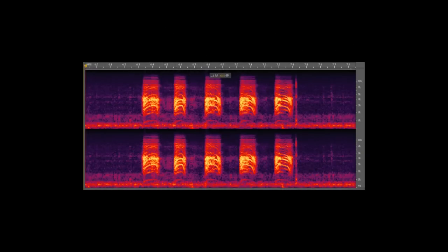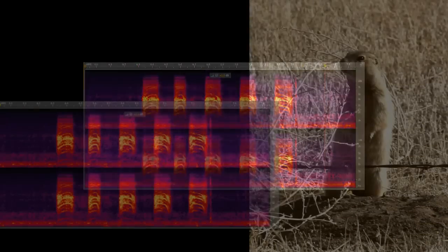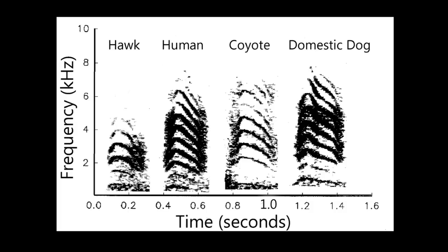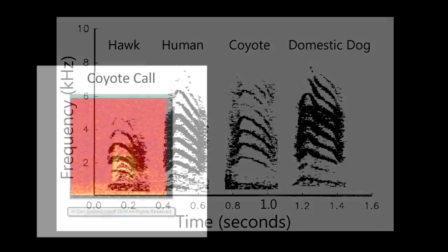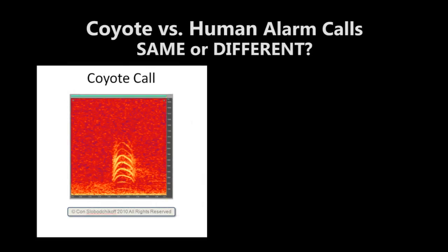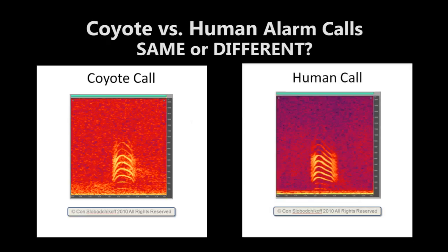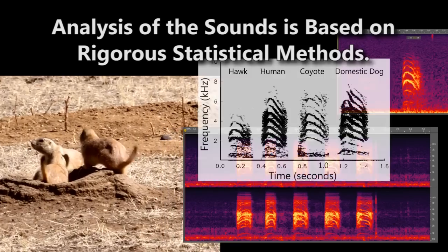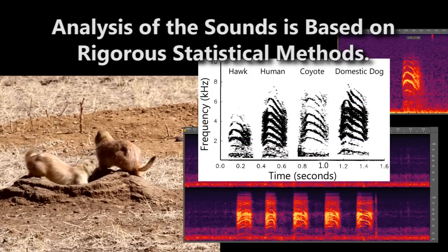Most of the calls are repeated multiple times. We can then measure the frequency and time values within a chirp and use statistical analysis to determine whether an alarm call for, say, a coyote, is the same as, or different than, an alarm call for, say, a human. So the analysis of the sounds is based on rigorous statistical methods.